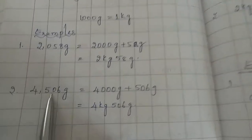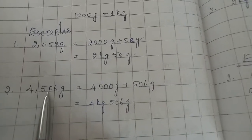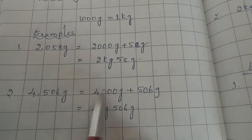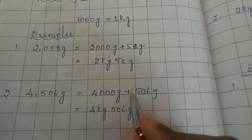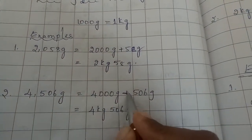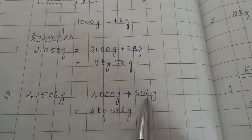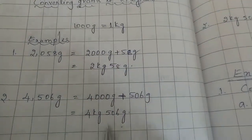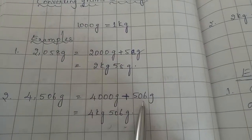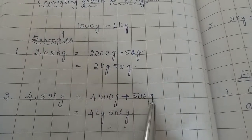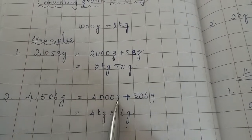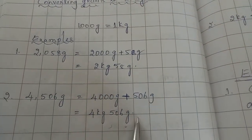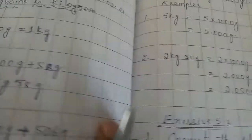Same like that, 4506 grams — we need to separate this. Expand: 4000 grams plus 506 grams. 4000 grams means 4 kg, so the answer is 4 kg 506 grams.